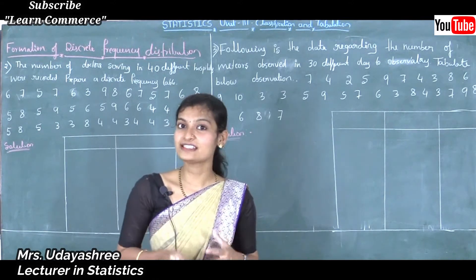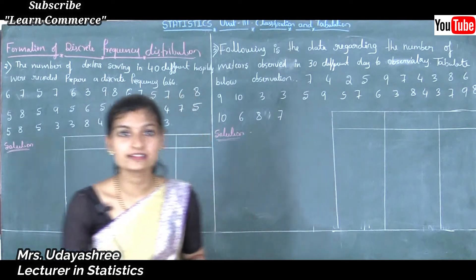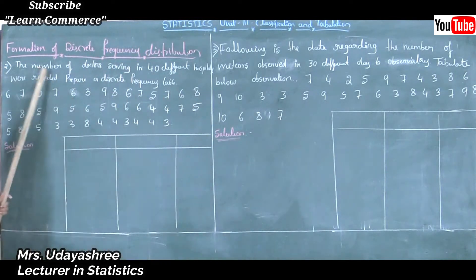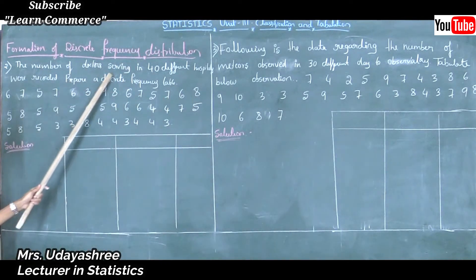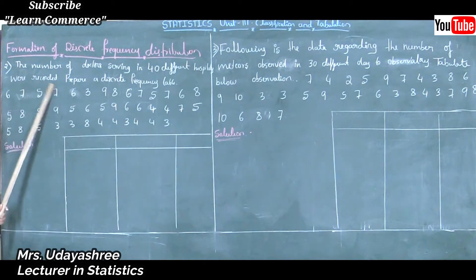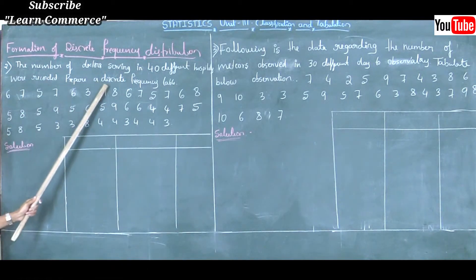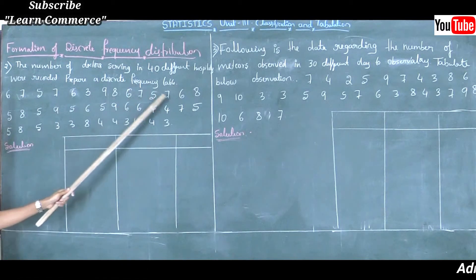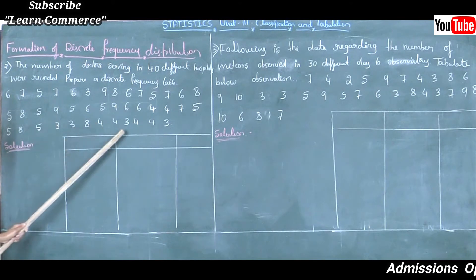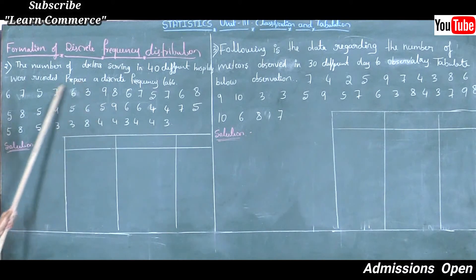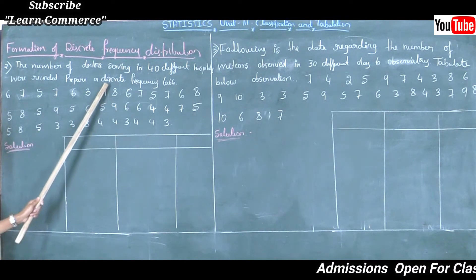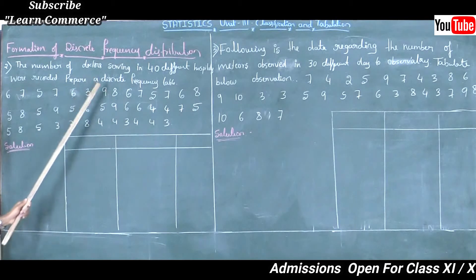Now let's see the second problem. The number of doctors serving in 40 different hospitals were recorded. Prepare a discrete frequency distribution. Here some observations are given, so for this observation I will apply discrete frequency distribution.